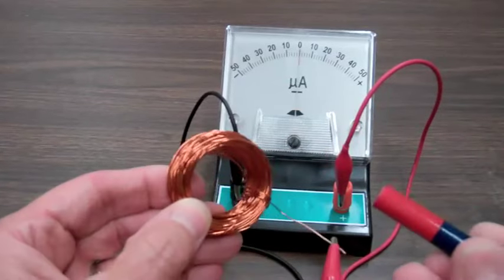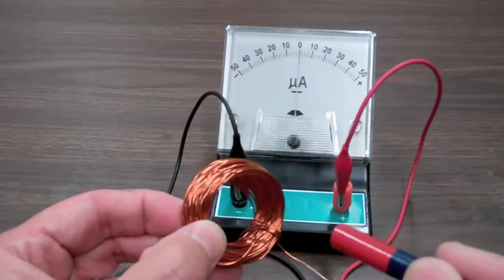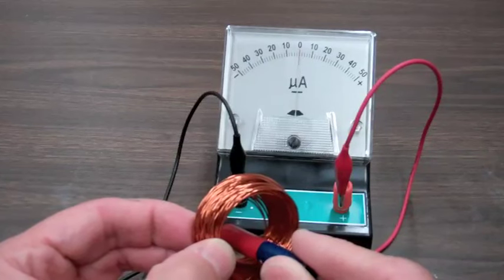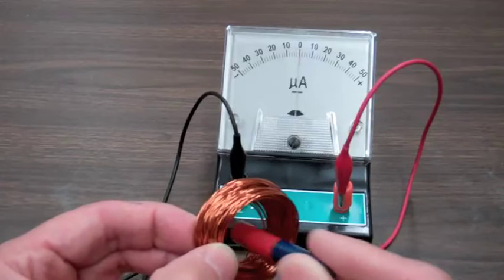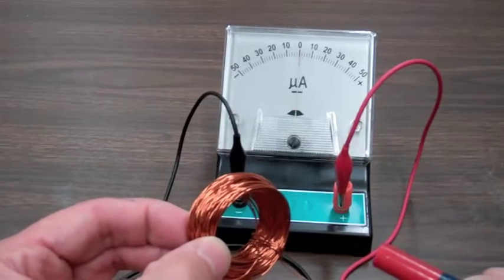I am now going to take the magnet and notice as I move it towards the coil, I get a pulse of current in the positive direction and when I pull it out there is a pulse in the minus direction.